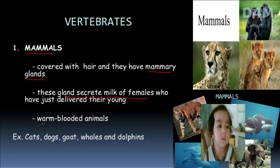These are warm-blooded animals. Examples include cat, dog, goat, whales, and dolphins. These are examples of mammals with mammary glands and warm-blooded characteristics.